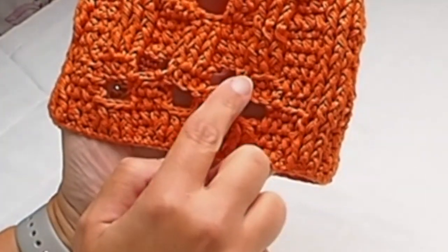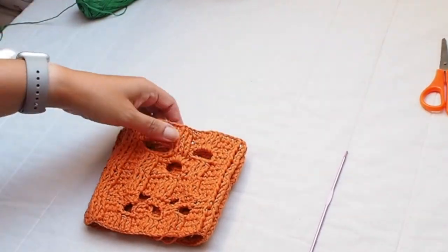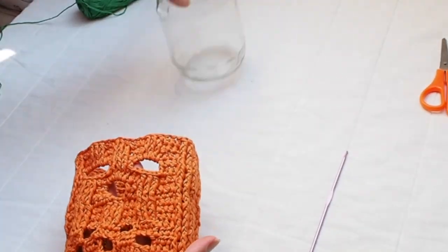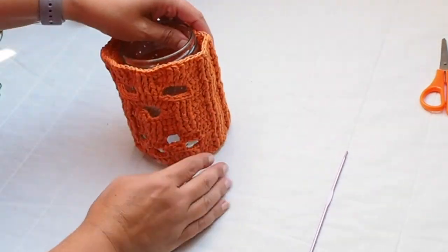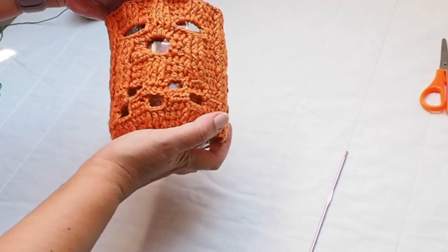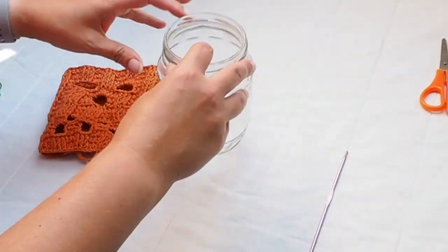And make the same process for nose and eyes. And this is it. This is how my sleeve for the bottle looks like.